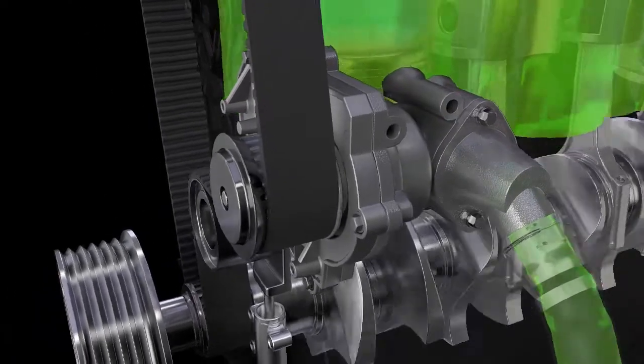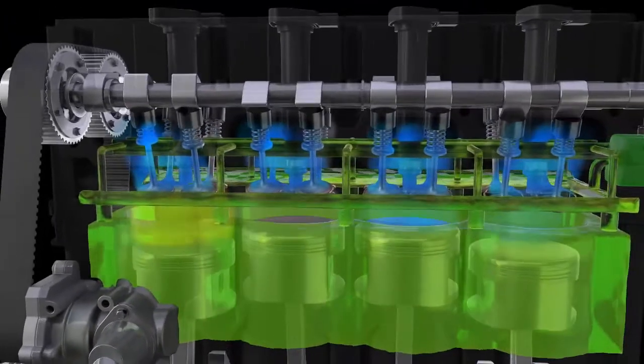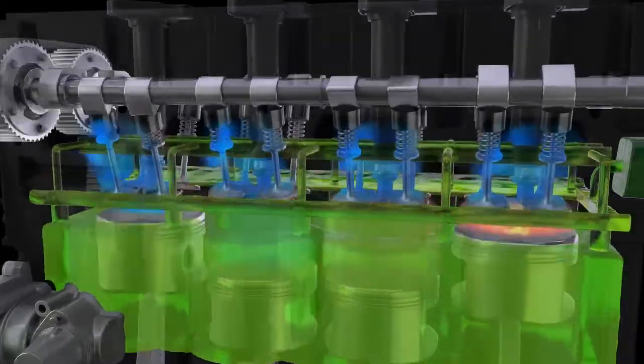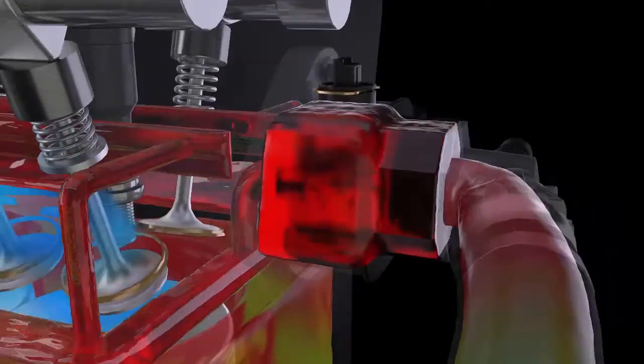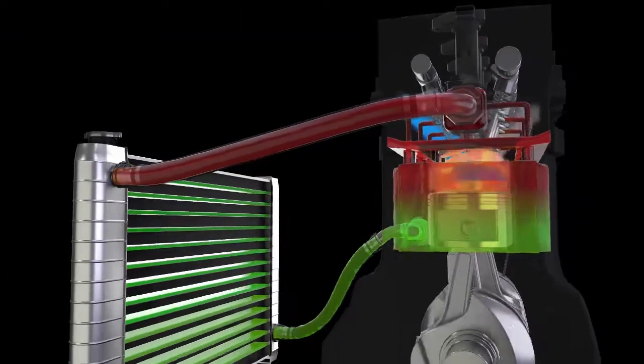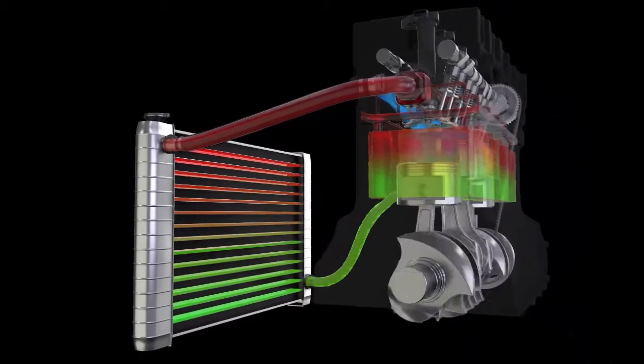The water pump circulates coolant through the engine to remove the heat generated by the combustion process. The coolant is then forced through the radiator to cool it down before returning to the engine again.